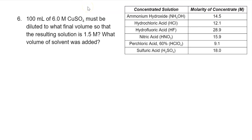Our last problem says 100 milliliters of 6 molar CuSO4 must be diluted to what final volume so that the resulting solution is 1.5 molar? And then what volume of solvent was added? We're being asked for our V2 value. We're given V1 of 100 milliliters, M1 of 6 molar, and M2 of 1.5 molar — the resulting concentration. So we're solving for V2.